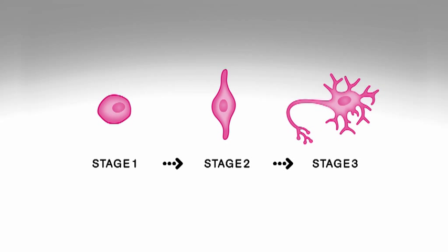Here's how it works. Differentiation normally occurs in stages. For example, a stem cell might first differentiate into a neural stem cell, then to a committed progenitor, and finally to a mature nerve cell.